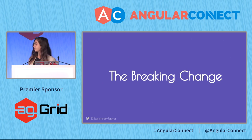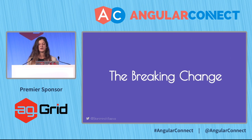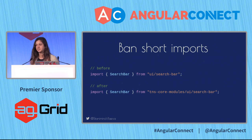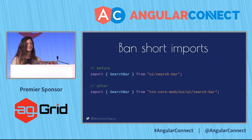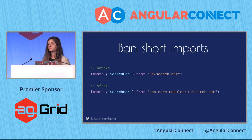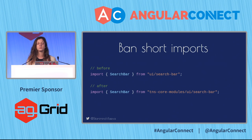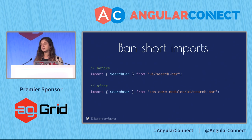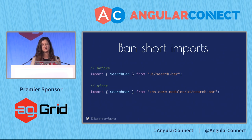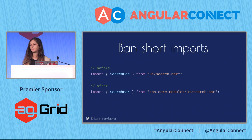Let's see what the breaking change is that we're going to be migrating. It is something NativeScript-specific — we introduced that change, so we're actually responsible for this. It's pretty simple: you used to be able to import from 'ui/search-bar', and now you have to import from the package called 'tns-core-modules' and then specify 'ui/search-bar'. It sounds straightforward and doesn't take much more than a search and replace.